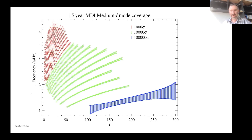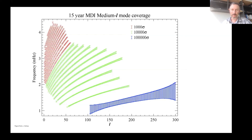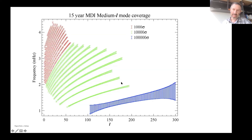Here's a mode coverage figure from Jesper showing mode coverage from 15 years of MDI medium-L observations. The really important thing is the color scale — even the red ones represent 1,000-sigma error bars on the mode frequencies. So we can measure these frequencies incredibly well. You might wonder why things stop at the ends of the ridges: the dominant effect is that modes start to blend together, line widths go up, modes get closer together, and it becomes hard to fit.